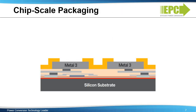Following the wafer fabrication, provisions are needed to make electrical connections to the device. The preferred method for making these connections is by soldering directly to the contacts. A typical process for creating solder bars or balls on an enhancement mode GAN HEMT is shown here.